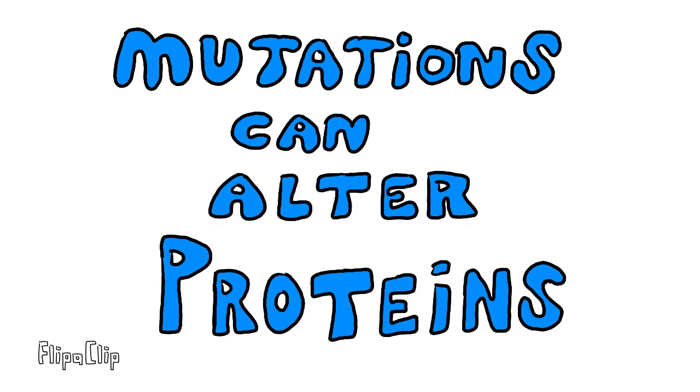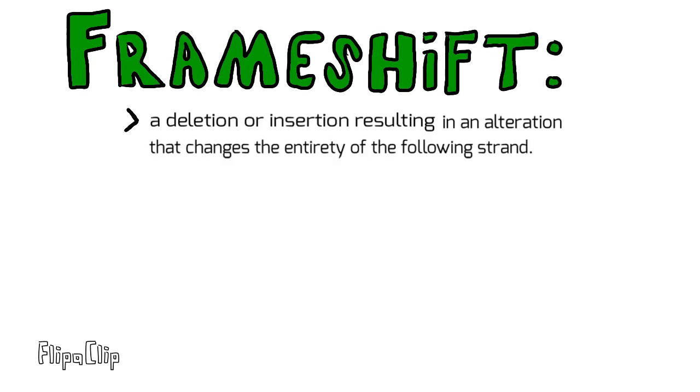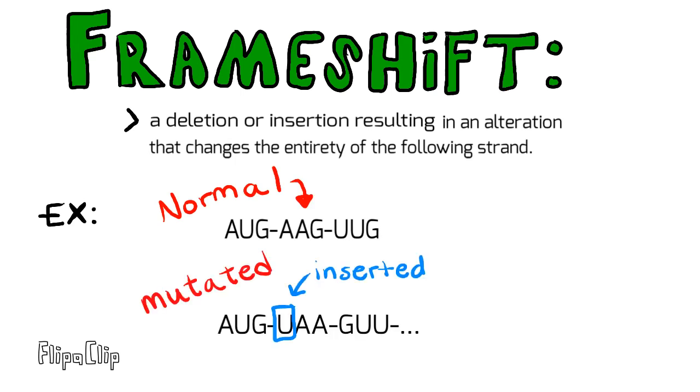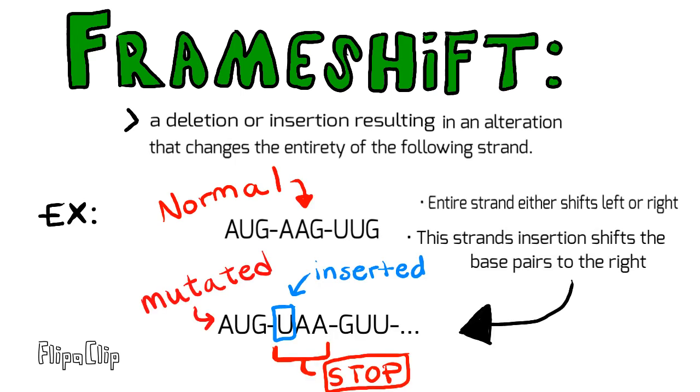Now that you know how proteins are made, let's talk about how mutations affect them. Although there is a variety of mutations, I will be talking about frameshift mutations in this video. A frameshift mutation is a deletion or insertion of a single base pair. This change causes all of the following base pairs to either shift right or left.